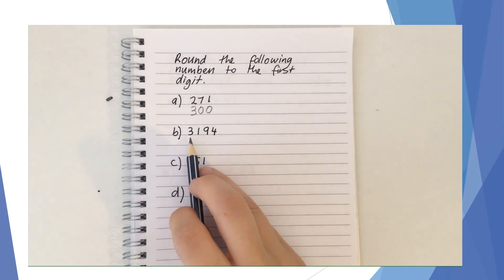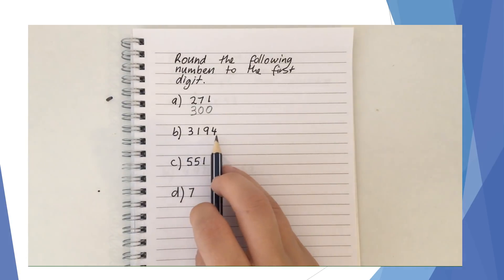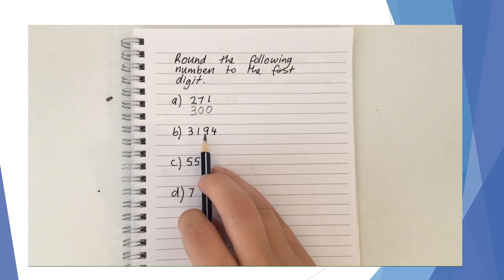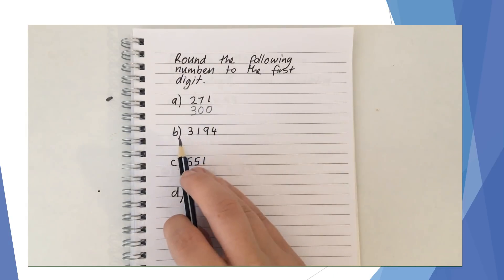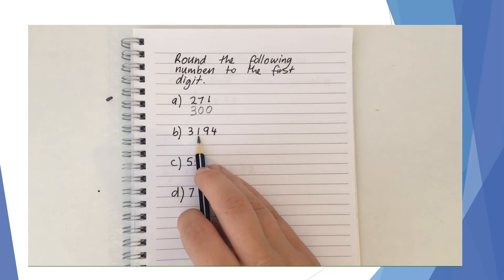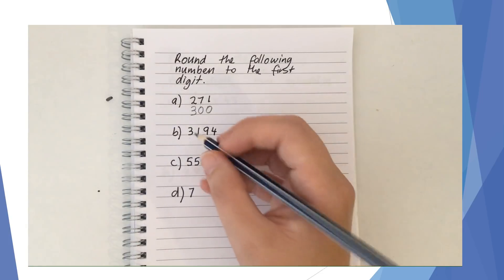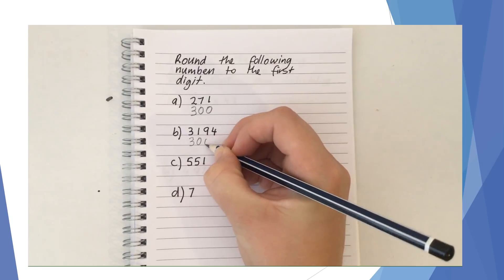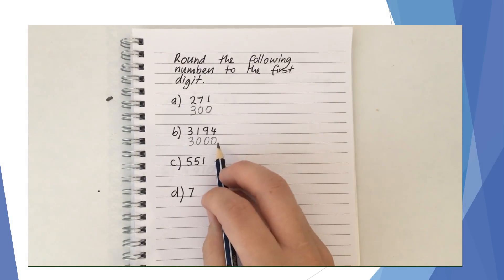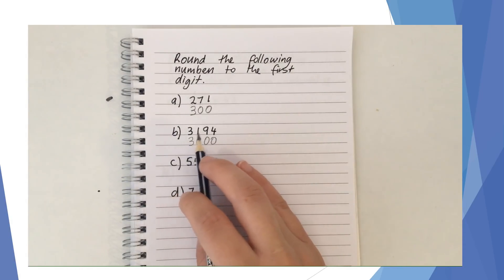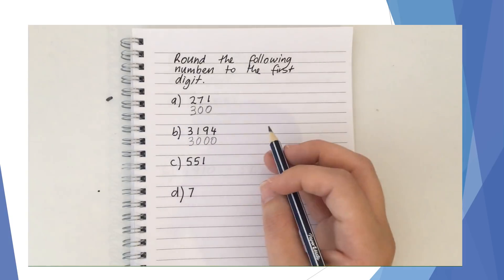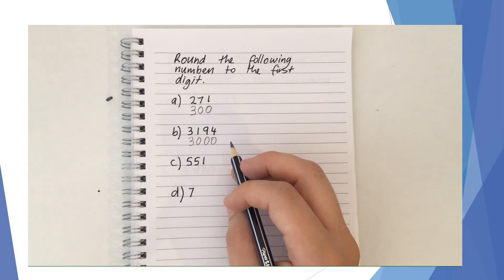Example B: 3194. I'm rounding to the first digit, so I look at the second digit and can ignore all digits after that. The second digit is 1, which means we'll be rounding down. So we leave the first digit as is and put in zeros to mark place, giving 3000. Checking: 3194 is closer to 3000 than it is to 4000, so our answer is correct.